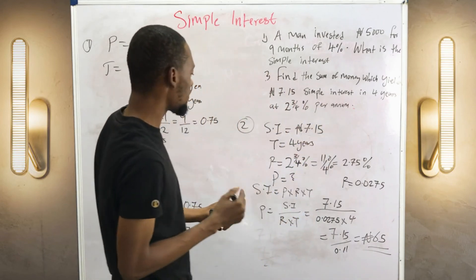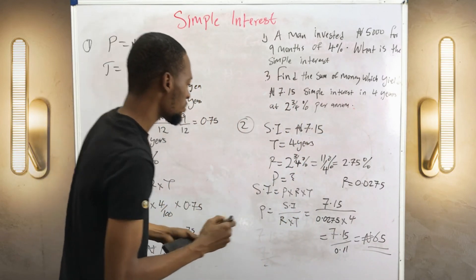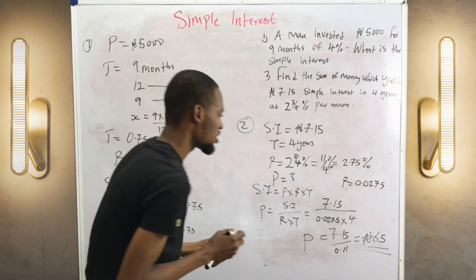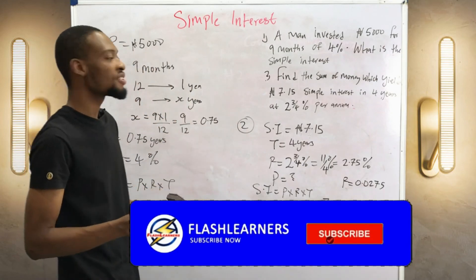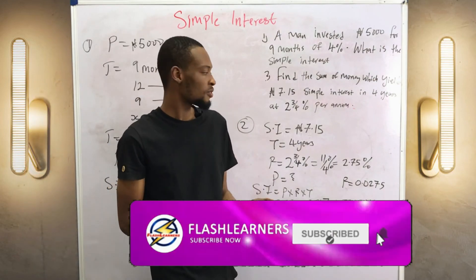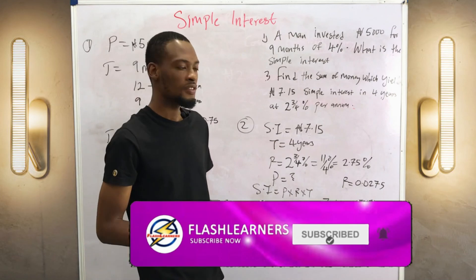So 65 naira, that was the principle. P equals 65. All right, thanks for watching. Don't forget to subscribe for more videos. Thank you.